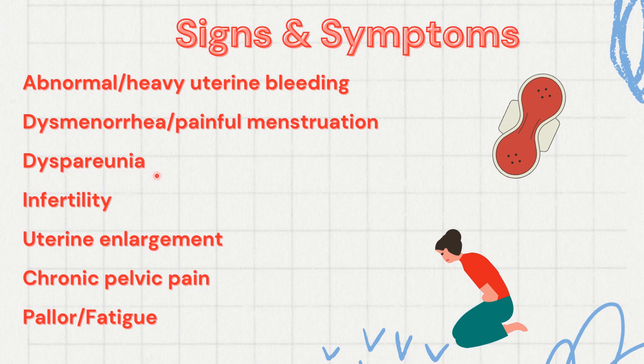Other signs and symptoms include dyspareunia (pain during intercourse), infertility, and uterine enlargement. The bleeding of endometrial tissue inside the myometrium triggers an inflammatory response, leading to hyperplasia of the smooth muscles and diffuse uterine enlargement. Additional symptoms include chronic pelvic pain, pallor, and fatigue — pallor and fatigue being primarily after-effects of anemia occurring due to chronic blood loss in abnormal uterine bleeding.